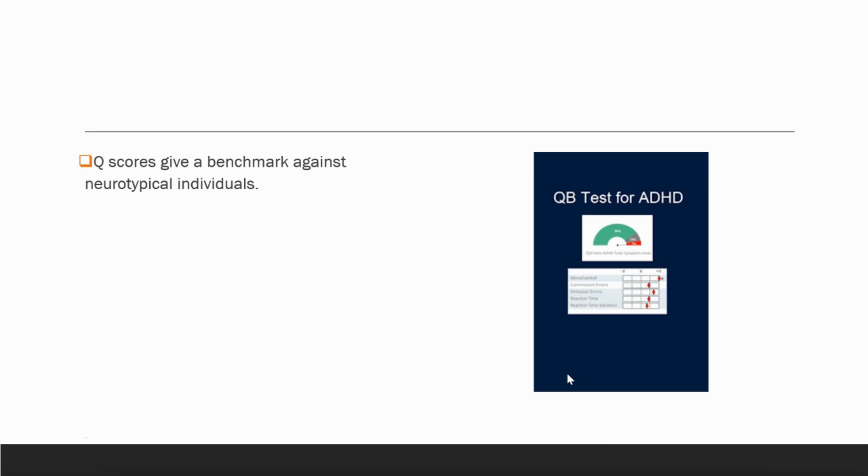Q scores give us a benchmark against neurotypical individuals. It isn't a diagnostic criteria for ADHD, something else could be going on. There are multiple factors that could be occurring, but it is showing you how they differ from a neurotypical individual in the same age range.